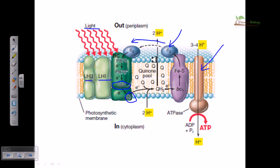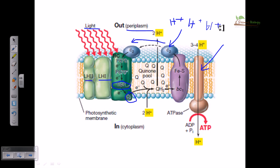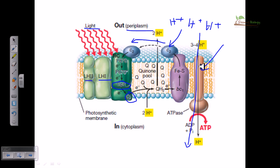Cytochrome C2 completes the cycle of electron flow in purple bacteria by going back from BC1 toward the reaction center. As the electron is transferred from one carrier to another, protons are stored in the periplasmic space outside the cell, creating a higher concentration of protons outside than inside — a proton density gradient. Protons are then pumped through the ATP synthase channel down their concentration gradient from outside to inside, and this energy is used to produce ATP by attaching ADP and inorganic phosphate.